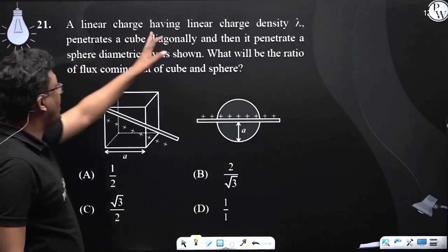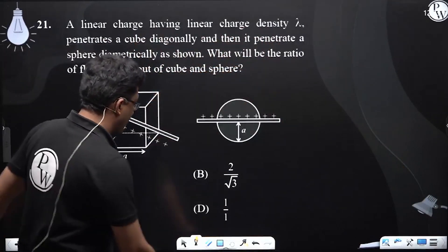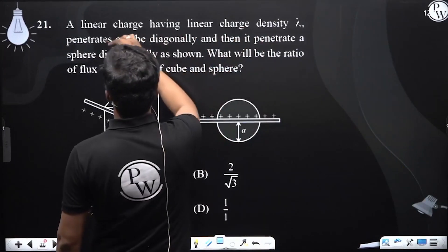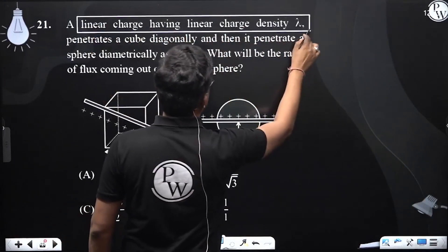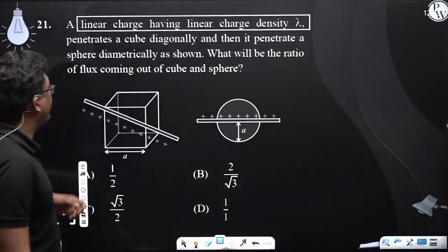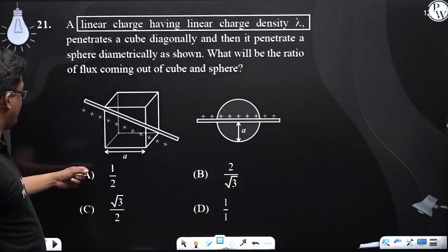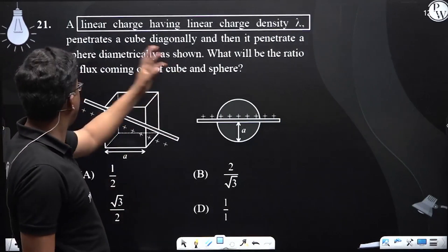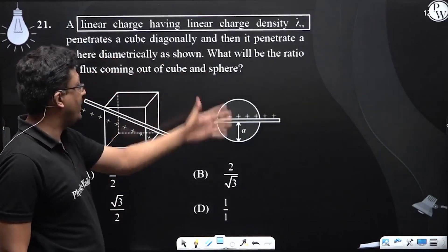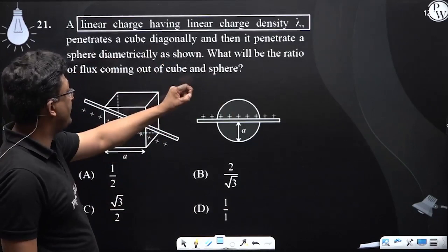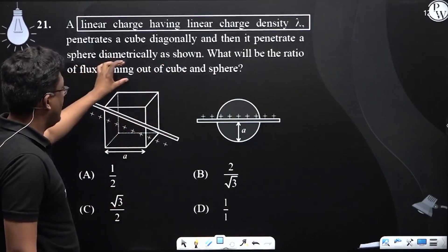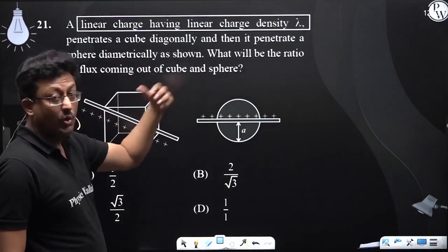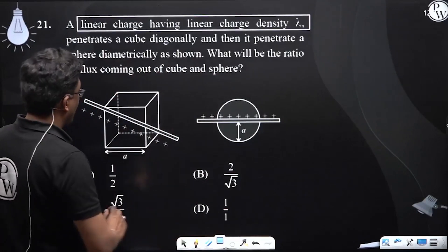Question number 21. A linear charge having charge density lambda penetrates a cube diagonally and then it penetrates a sphere diametrically as shown. What will be the ratio of flux coming out of the cube and sphere?